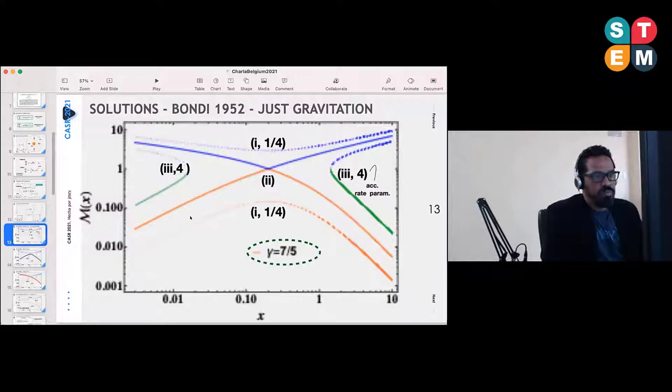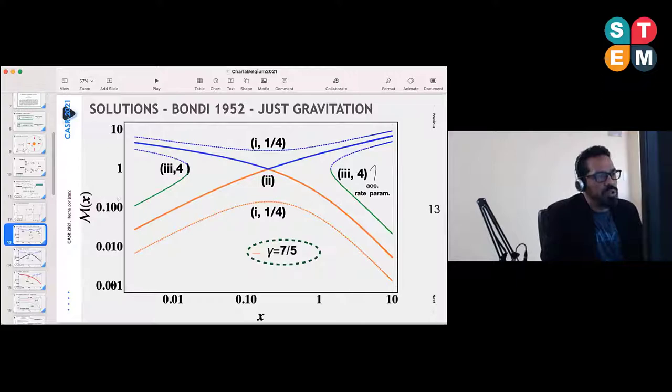Taking all these ingredients together, we arrive at some of the important profiles to show. In this case, this is the Mach number as a function of the distance. As I said, I chose for this example gamma equal to seven-fifths, with four important accretion rate parameters.